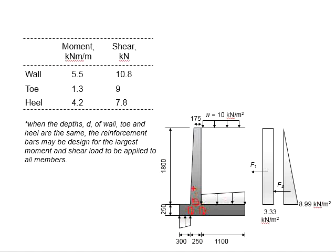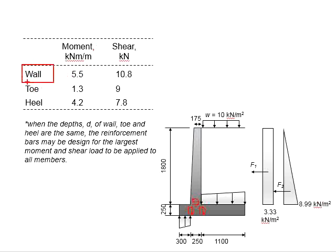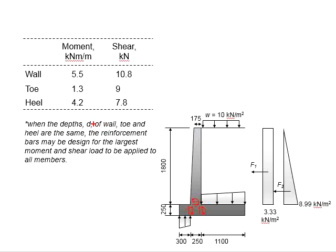The same principles apply to the heel. For a stress in the form of a trapezoid, you can always consider it as two elements: a rectangle and a triangle. This helps you determine the exact locations of the resultant force acting on the base. With that, you may design separately for the wall, toe, and heel for the moment and shear, or if the depth of the wall, toe, and heel are the same, the reinforcement can be designed using the largest value to be applied throughout the entire retaining wall.